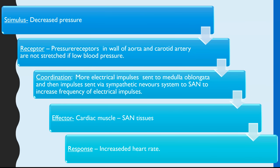For a decrease in pressure, the same receptors are involved but the response is opposite. If blood pressure is lower, the receptors are not being stretched. More electrical impulses are still sent to the medulla oblongata, but this time it triggers more impulses along the sympathetic nervous system. More impulses reach the SAN — the effector is the cardiac muscle and SAN tissues — and the response is an increase in heart rate.